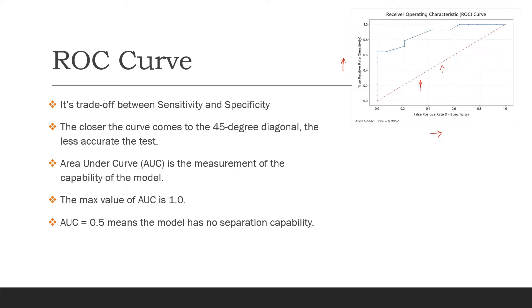This line is of the useless model. If your model is useless, it doesn't do anything. That means you can find out whether the person has a credit card or not just by flipping a coin, just by chance. This line represents that model.